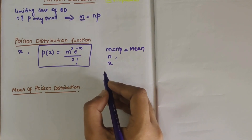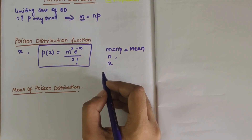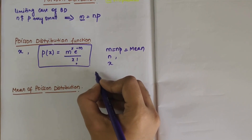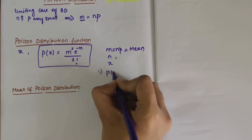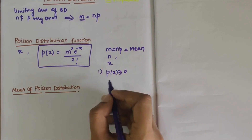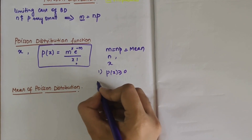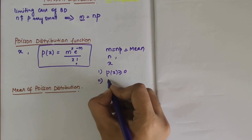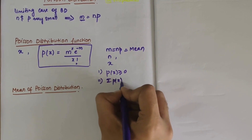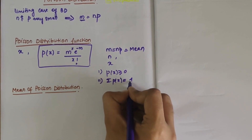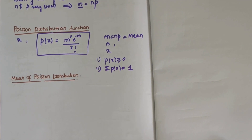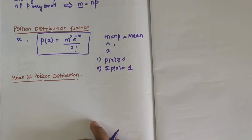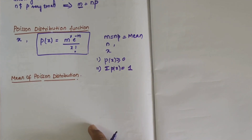The probability function must satisfy two conditions: P(x) should always be greater than or equal to 0, and the sum of all probabilities should equal 1. Now let's move on to finding the mean of Poisson distribution.